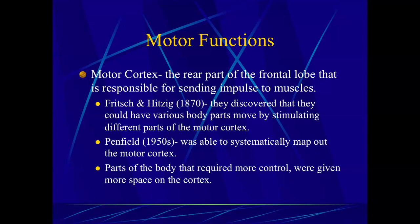Who helped us better understand the motor cortex? It starts with Frits and Hitzig, who stimulated different parts of the motor cortex and noticed different body parts would twitch. This part of the motor cortex might cause a twitch in the arm, another part a twitch in the leg. He wrote his findings saying there are different parts of the motor cortex responsible for triggering stimulation to different body parts. But it was Wilder Penfield who did it more systematically, mapping out every part of the motor cortex and labeling what they were able to do.